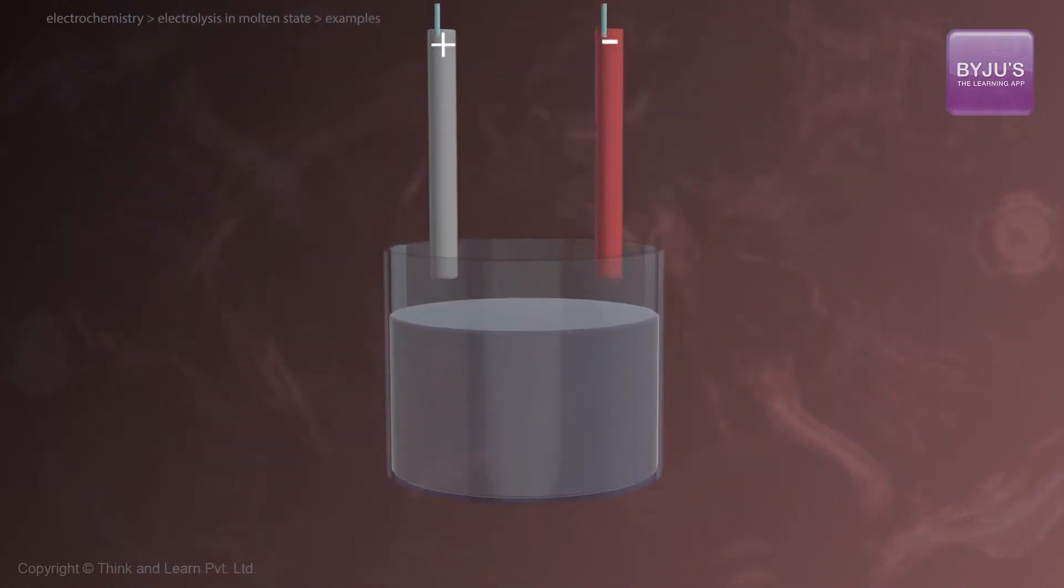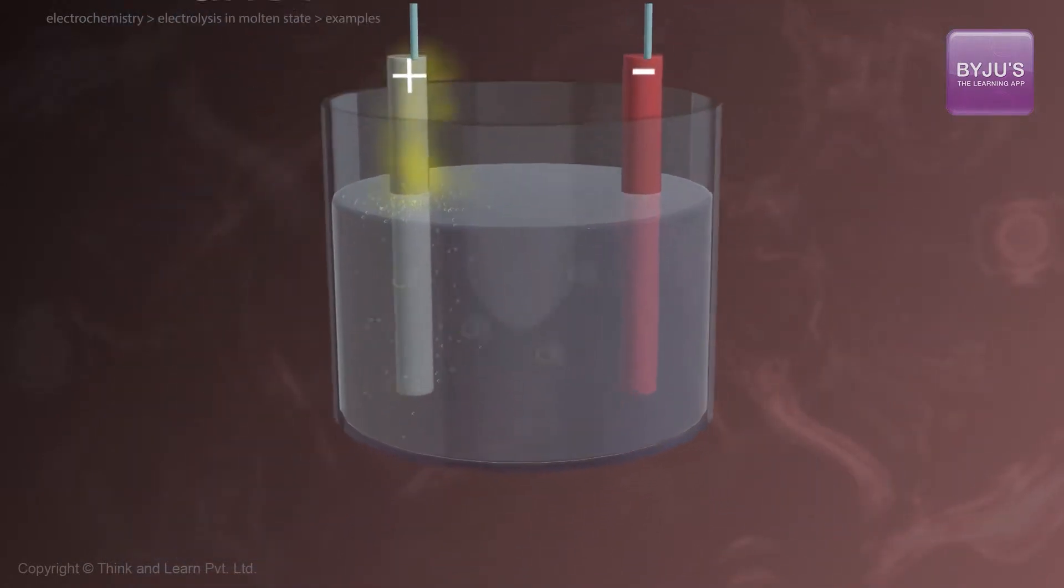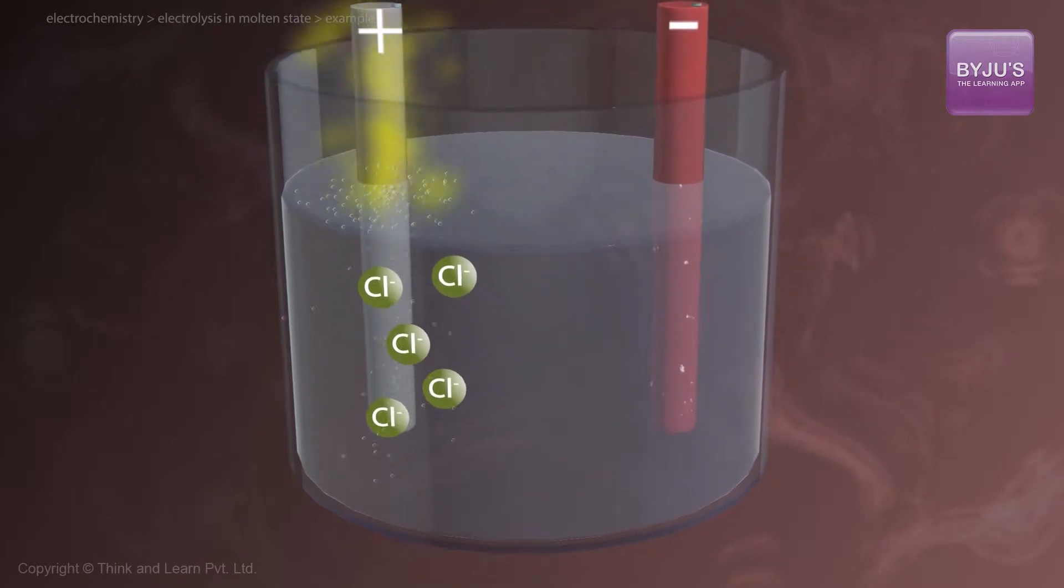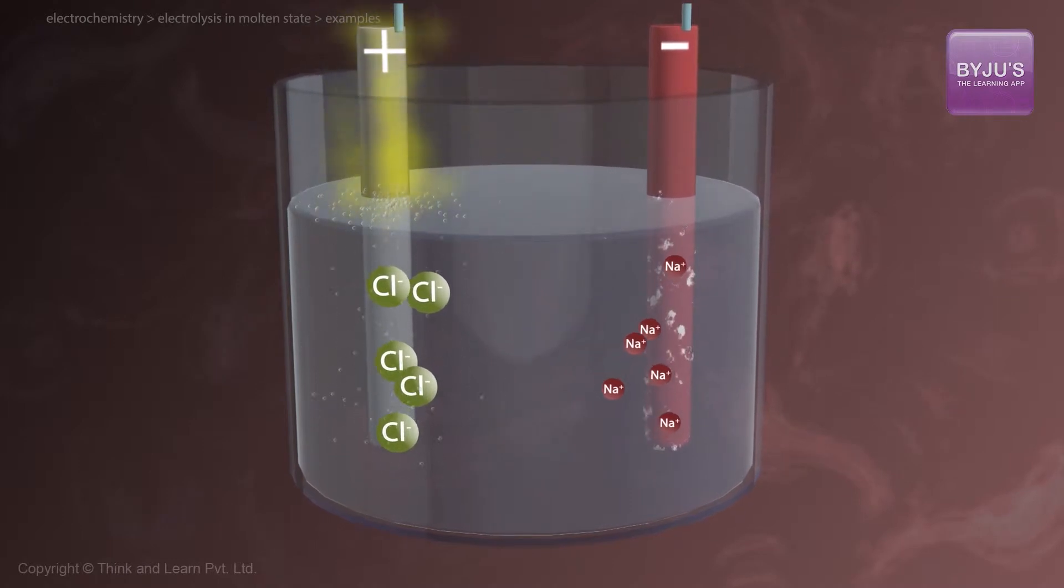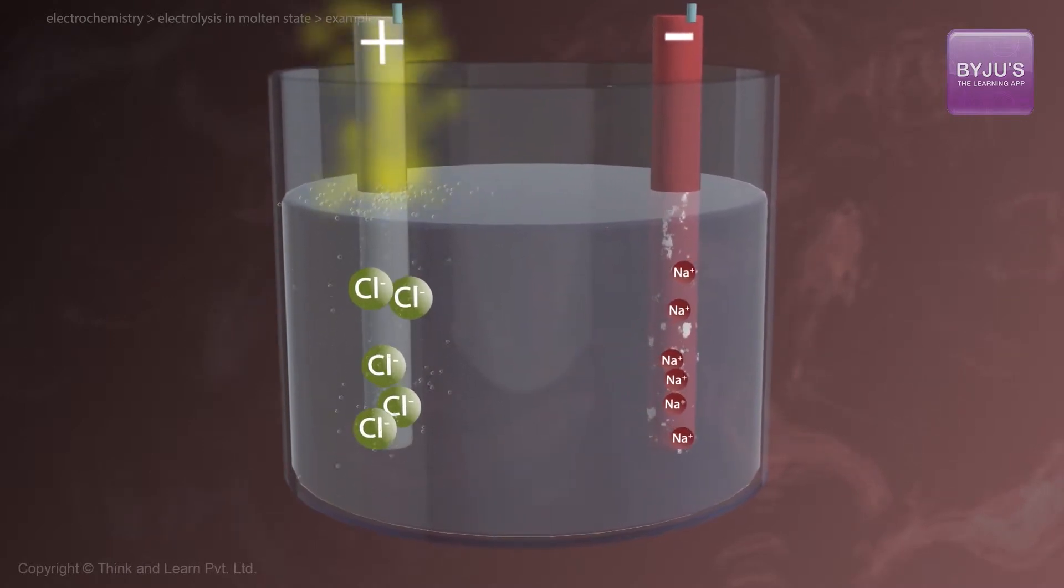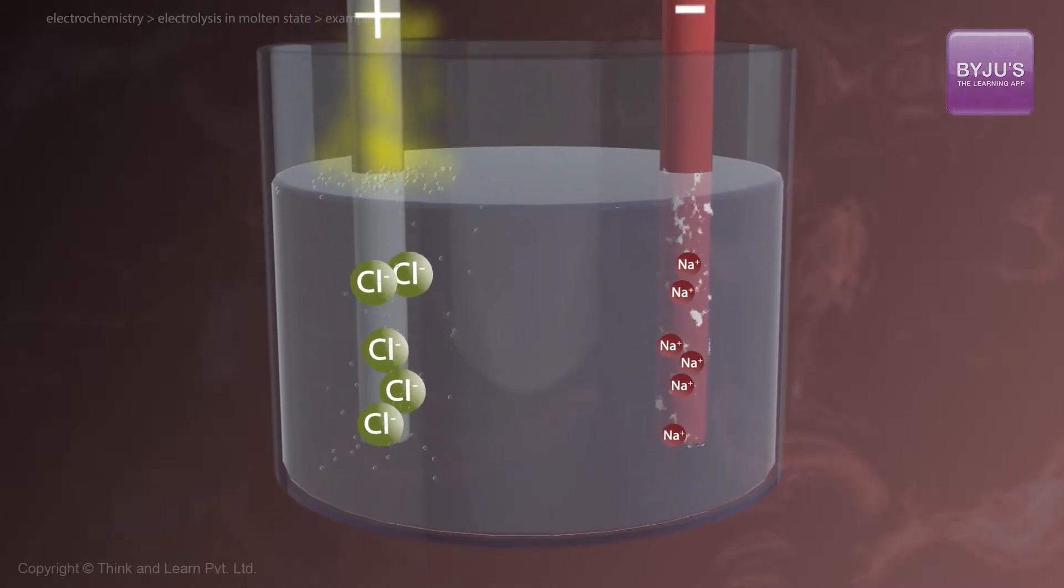As electric current is passed through the cell, Cl- ions are attracted to the anode, which is the positive electrode, and Na+ ions are attracted to the cathode, which is the negative electrode. Both ions are discharged at their respective electrodes with the following reactions.